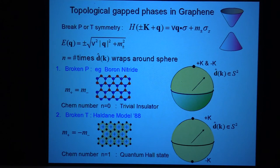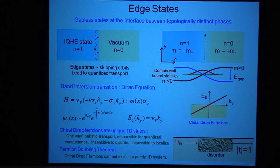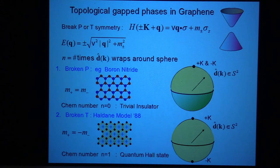The interesting thing is what happens at the interface between these two. At the interface between these you get edge states. And we can understand these edge states in just the same way that we understood the domain wall state in the Sushry-Ferhiger model. So if we have a boundary between n equals one and n equals zero, I can think of that as a boundary where I just change the sign of the mass term at one of the k points.